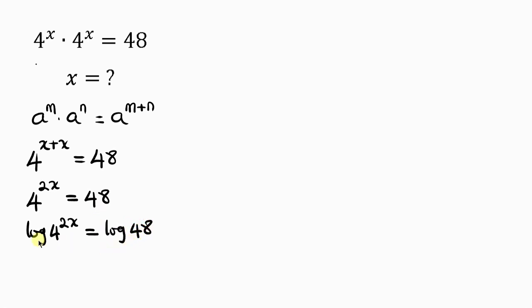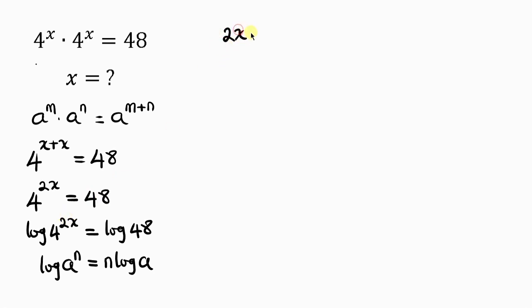Our next step will be to apply the power rule of logarithms, which says when I have log of a to the n, this is the same as n times log a. That means what I have on the left can now be written as 2x times log 4, equal to log 48.